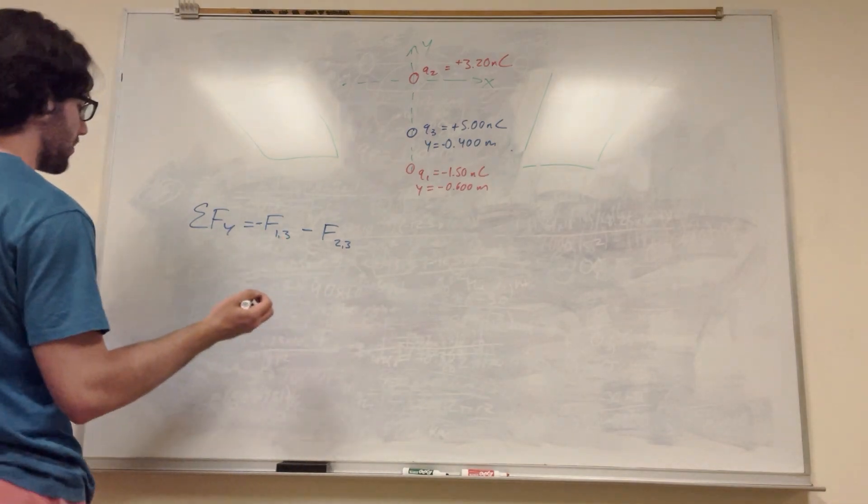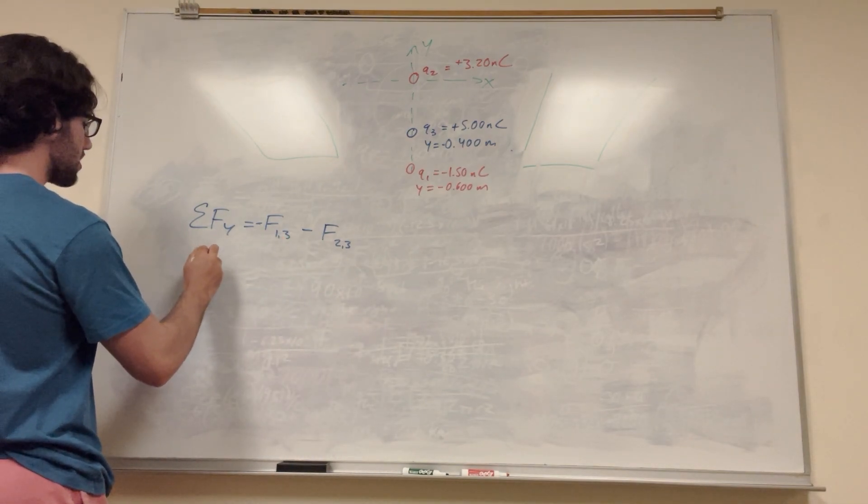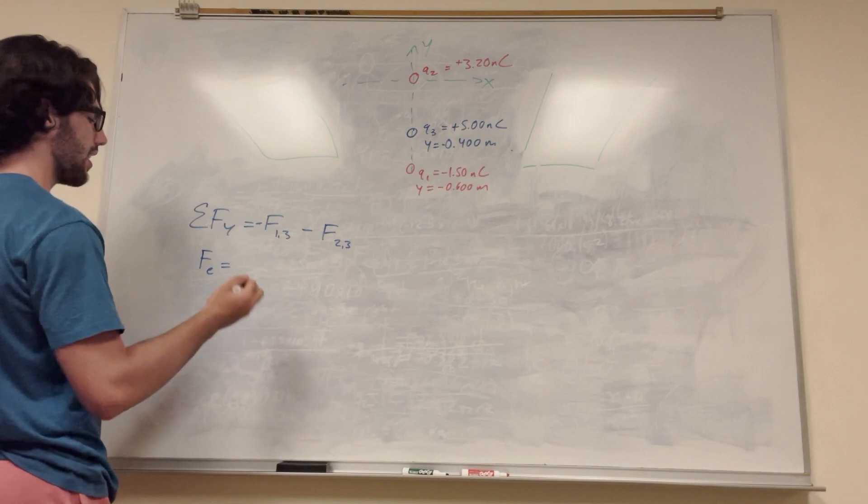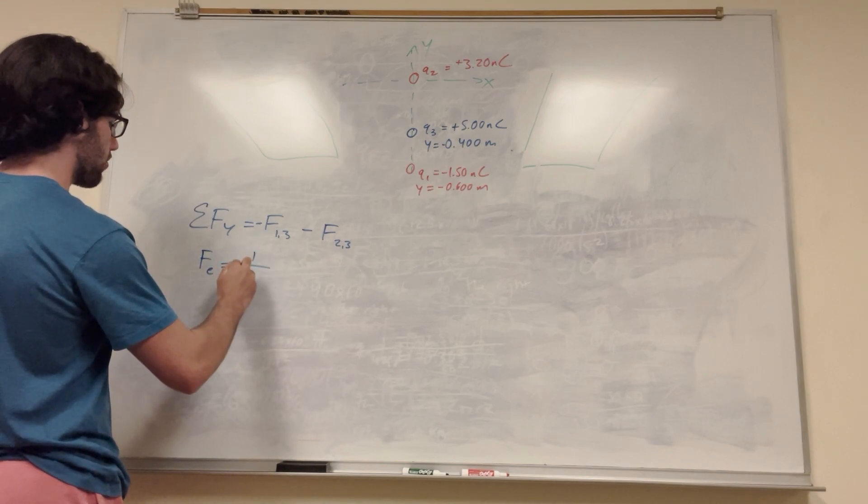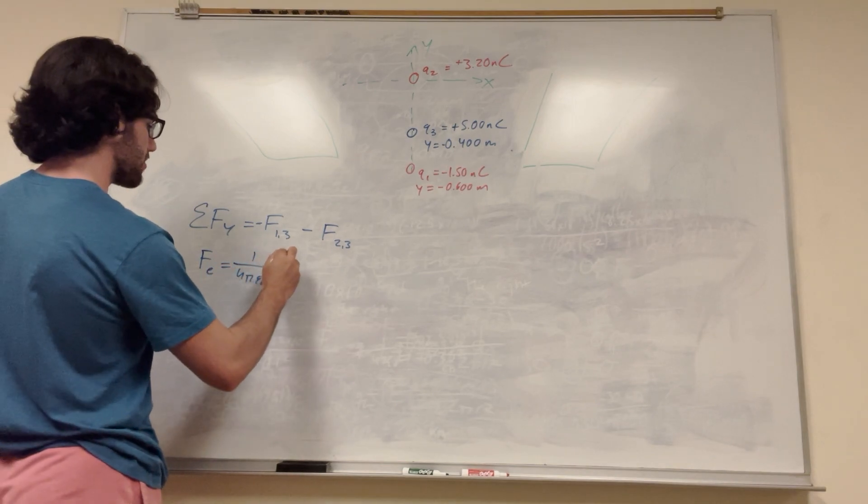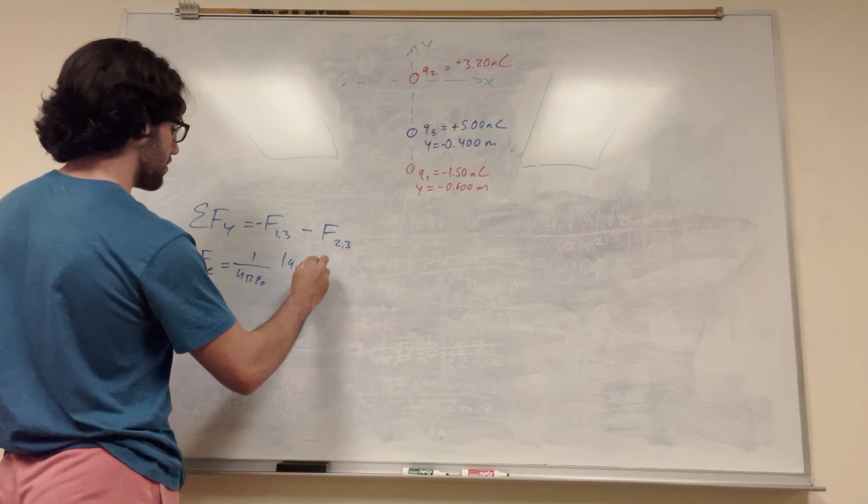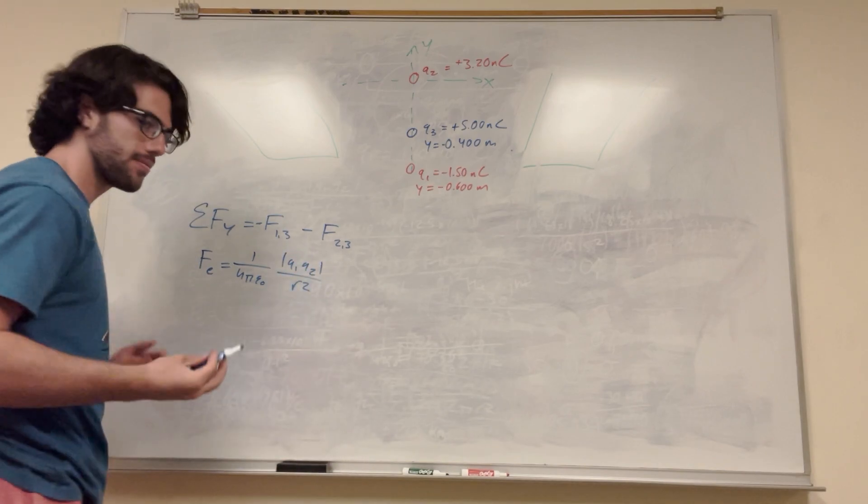But what are these forces? We need to know what the force is. So force in electric is equal to 1 over 4π epsilon naught times the absolute value of Q1 Q2 over r squared. There we go.